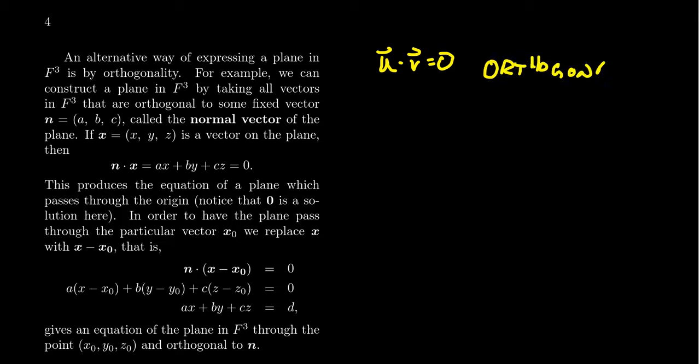I tried to make a geometric connection between this algebraic notion of orthogonality with the geometric notion of perpendicularity, that is right angles and such. I want to explain how this can be useful in constructing hyperplanes in our vector space.